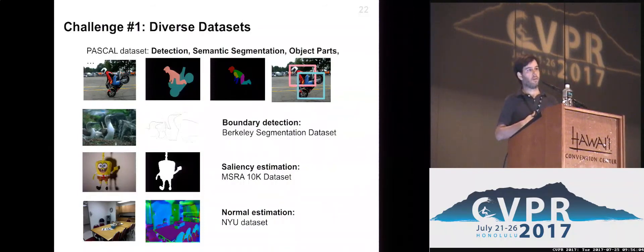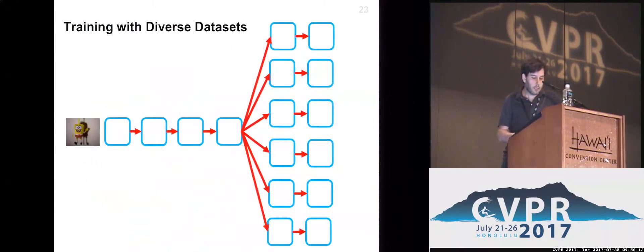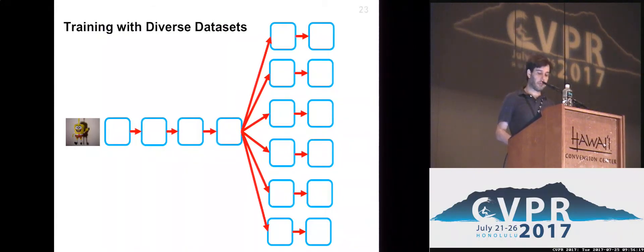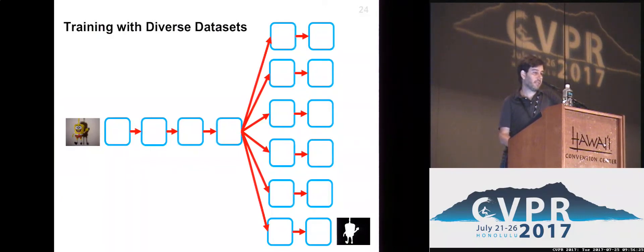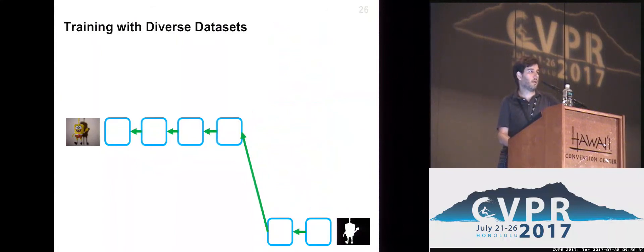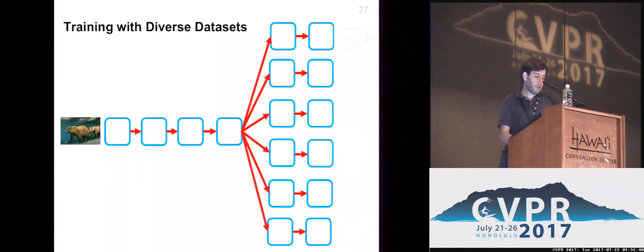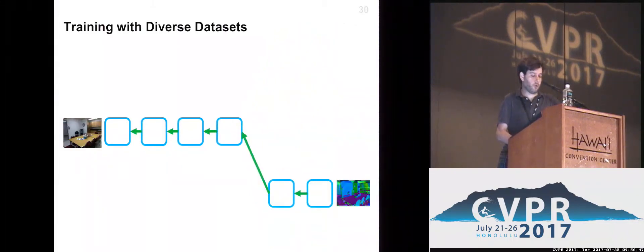One approach would be to alternatively train over the different tasks — train on one task and then fine-tune on another — but this doesn't guarantee that we're jointly optimizing performance. Instead, what we do is present every image to the network with annotation for one among the many tasks the network can tackle, and backpropagate on the loss of that particular task exclusively. We are dynamically constructing a graph for our network, where the remaining task-specific branches become irrelevant, and in another image with boundary detection supervision we effectively have only a subgraph of the original network, and so on. We are interleaving tasks when training our network on an example-by-example basis.